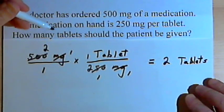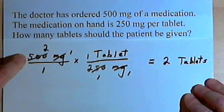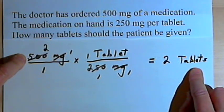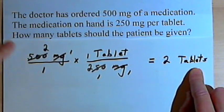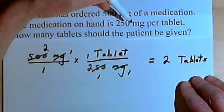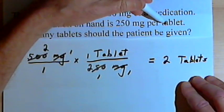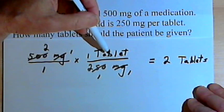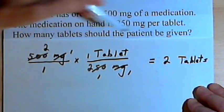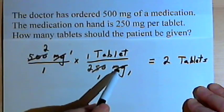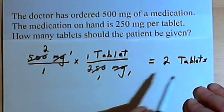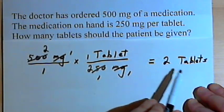So all I did here was this: I started out with the amount of medication the doctor ordered. I put in an equal sign and wrote the unit I wanted to end up with. Then I made a fraction out of the rest of the information — 250 milligrams is the same as one tablet. I put tablets in the numerator so I would end up with tablets in my answer, and milligrams in the denominator so I could cancel them out. Then I simplified everything, multiplied across, and got my answer.